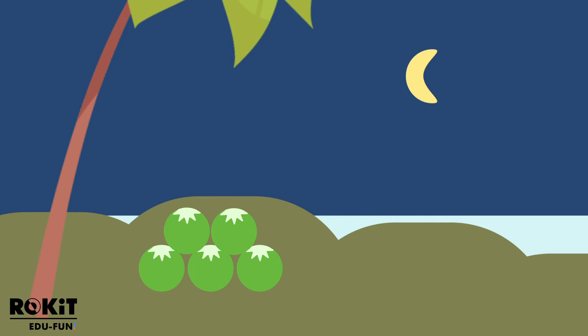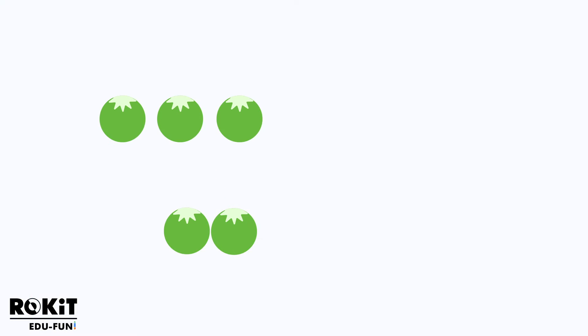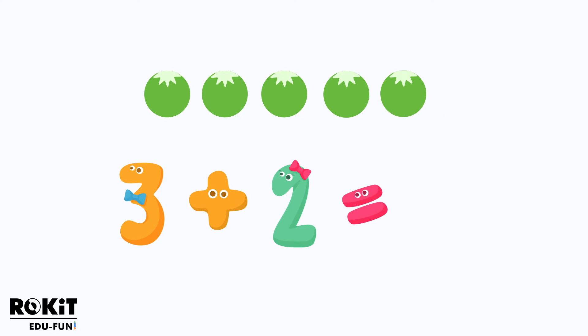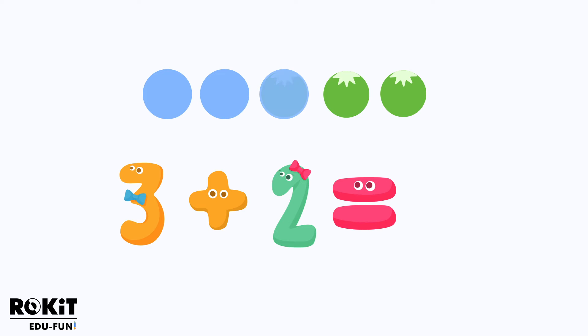First, let's see how many coconuts fell in the morning — three. Then let's count how many coconuts fell at night — two. So it's three plus two equals, and now we'll count all the coconuts: one, two, three, four, five. Five coconuts in total fell from the tree.